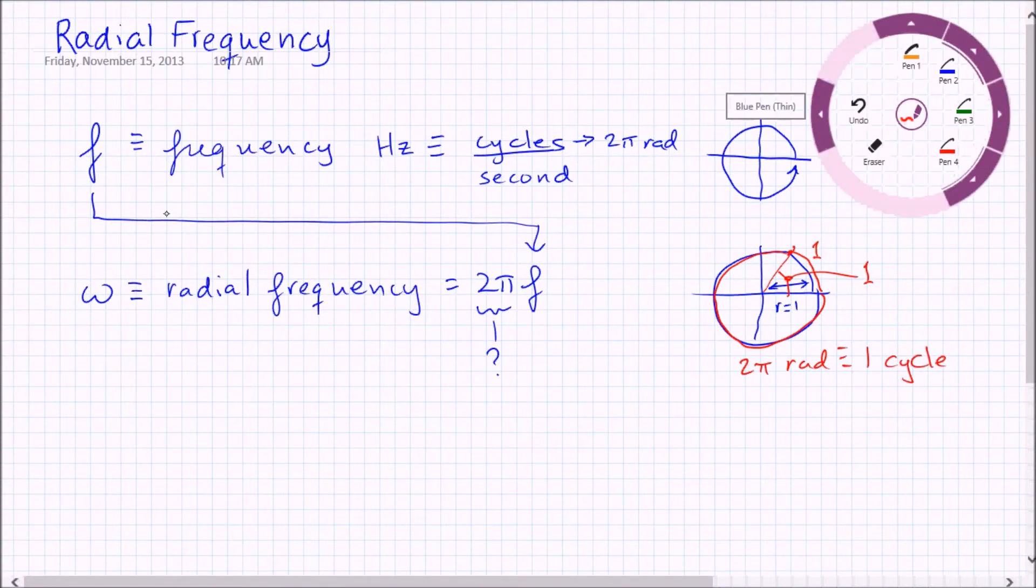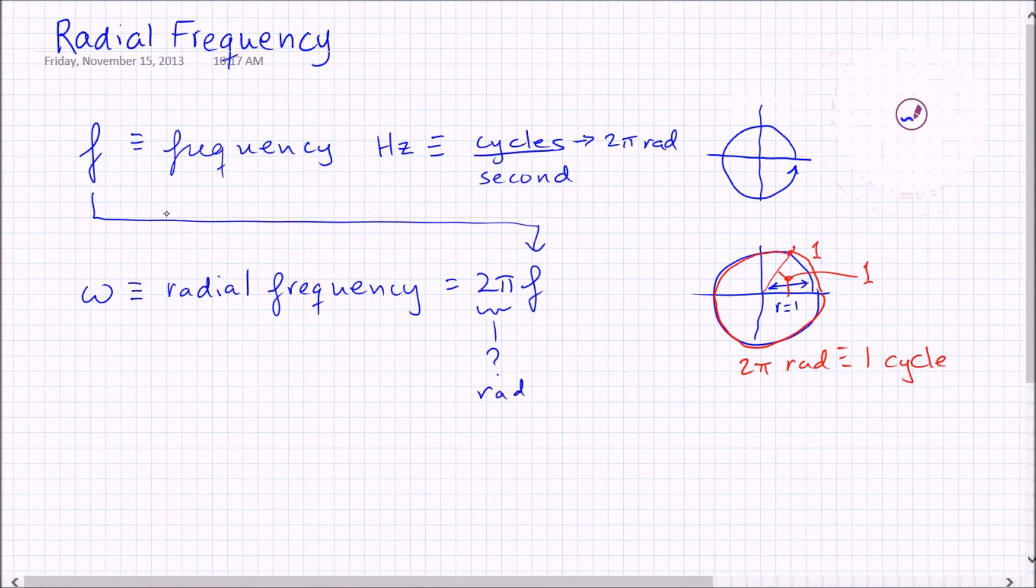So you can see that basically the unit, this two pi in here, is just because it's a conversion factor between radians and cycles.